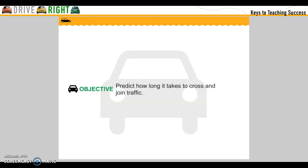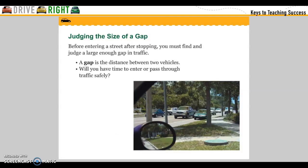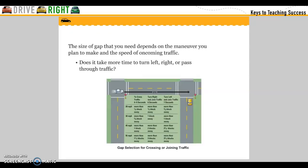Objective: Predict how long it takes to cross and join traffic. Before entering a street, after stopping, you must find and judge a large enough gap in traffic. A gap is the distance between two vehicles. Will you have time to enter or pass through traffic safely? The size of the gap you need depends on the maneuver you plan to make and the speed of oncoming traffic.